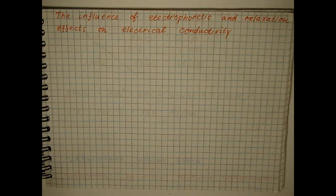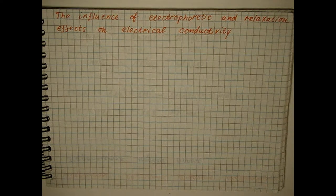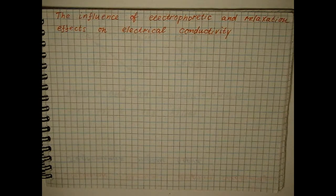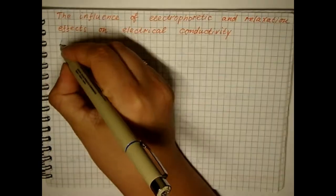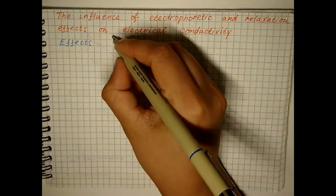the Debye Huckel theory can be used. Under non-equilibrium conditions, the existence of an ionic atmosphere is due to effects that slow down the motion of the central ion.